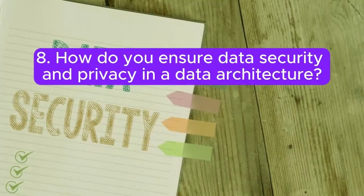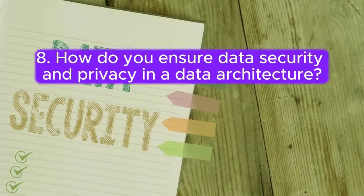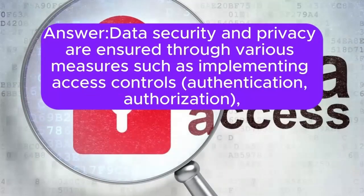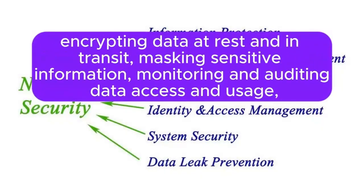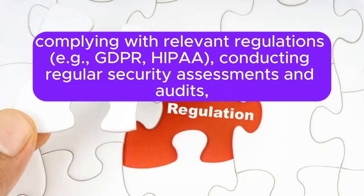Question 8: How do you ensure data security and privacy in a data architecture? Data security and privacy are ensured through various measures such as implementing access controls, authentication and authorization, encrypting data at rest and in transit, masking sensitive information, monitoring and auditing data access and usage, and complying with relevant regulations such as GDPR.